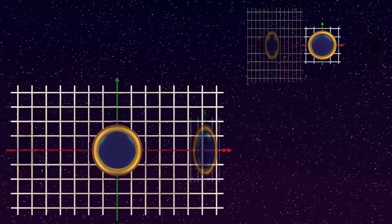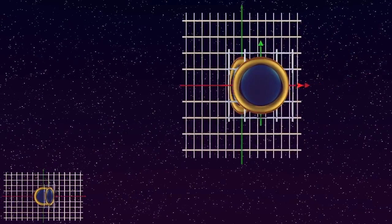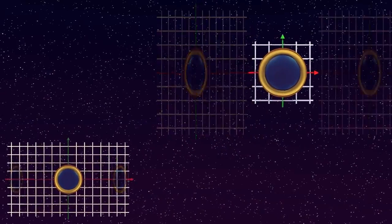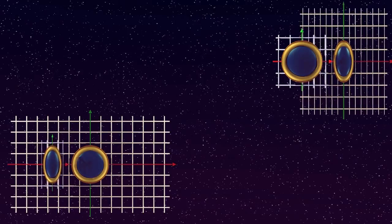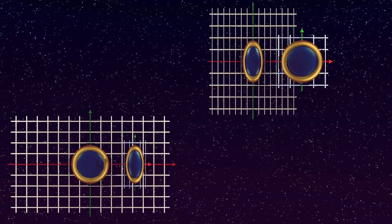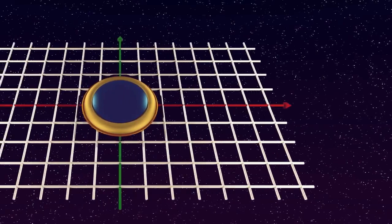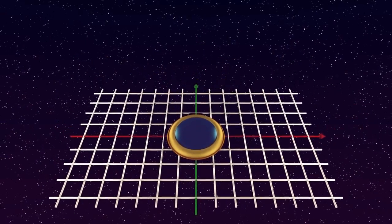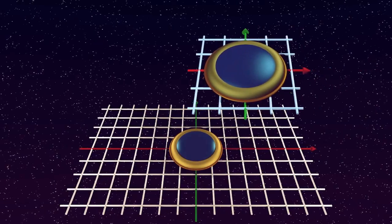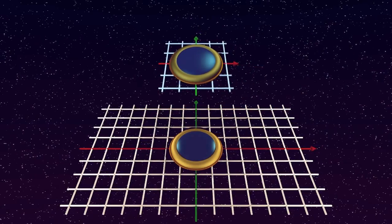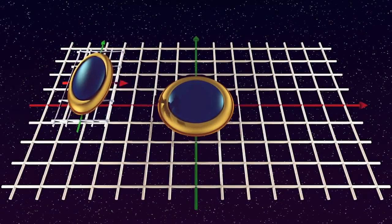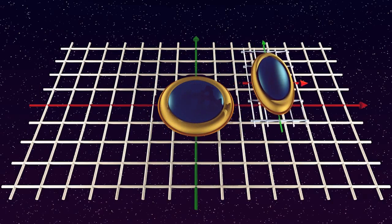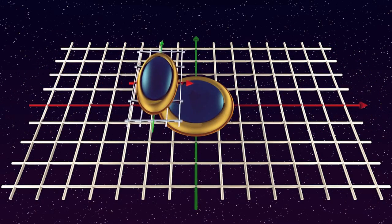Now we can say that in the length contraction paradox, we are essentially trying to compare an instantaneous space-time cross-section of zero time slope with a non-instantaneous one of finite time slope. Yet the only way we know to reliably compare object lengths is by means of instantaneous snapshots, or just the same, by means of instantaneous space-time cross-sections. In the relativistic world, however, we must extend our comparison to non-instantaneous space-time cross-sections.